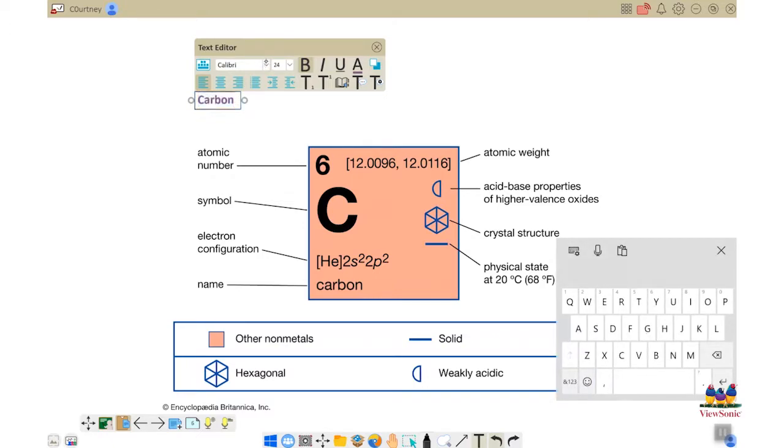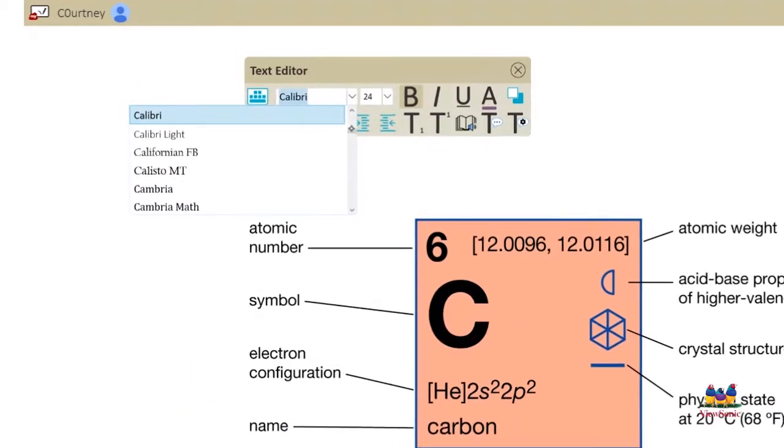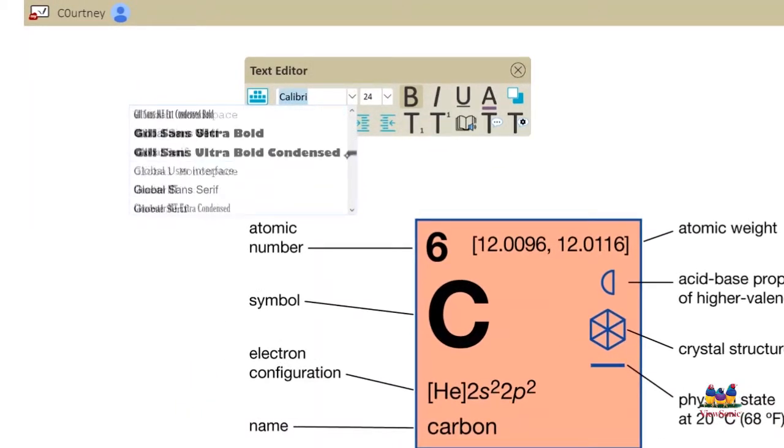If you want to change the font on that text, highlight it and then click the down arrow next to where it says Calibri and go through all the different fonts that are there.